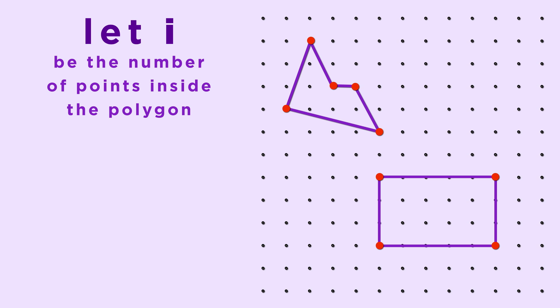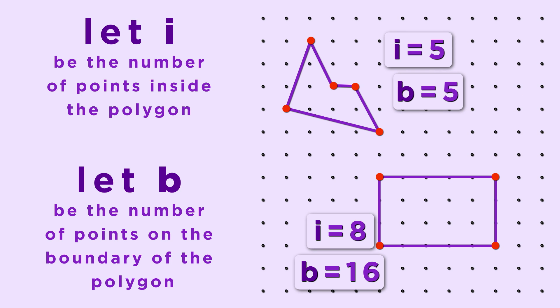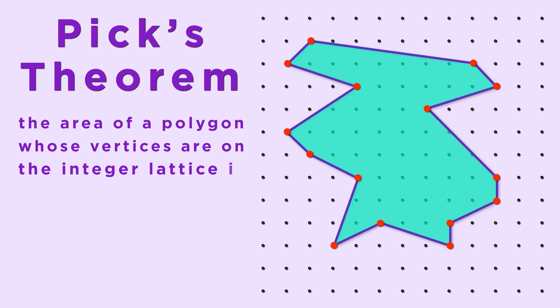Let I be the number of points inside the polygon and let B be the number of points on the boundary of the polygon. So for this rectangle, I equals 8 and B equals 16, while for this shape, I equals 5 and B equals 5. Remember at the beginning of this episode, I said that we have an easy formula for the area of this crazy shape. Here it is. Pick's theorem says that the area of a polygon whose vertices are on the integer lattice is given by the formula area equals I plus B over 2 minus 1.